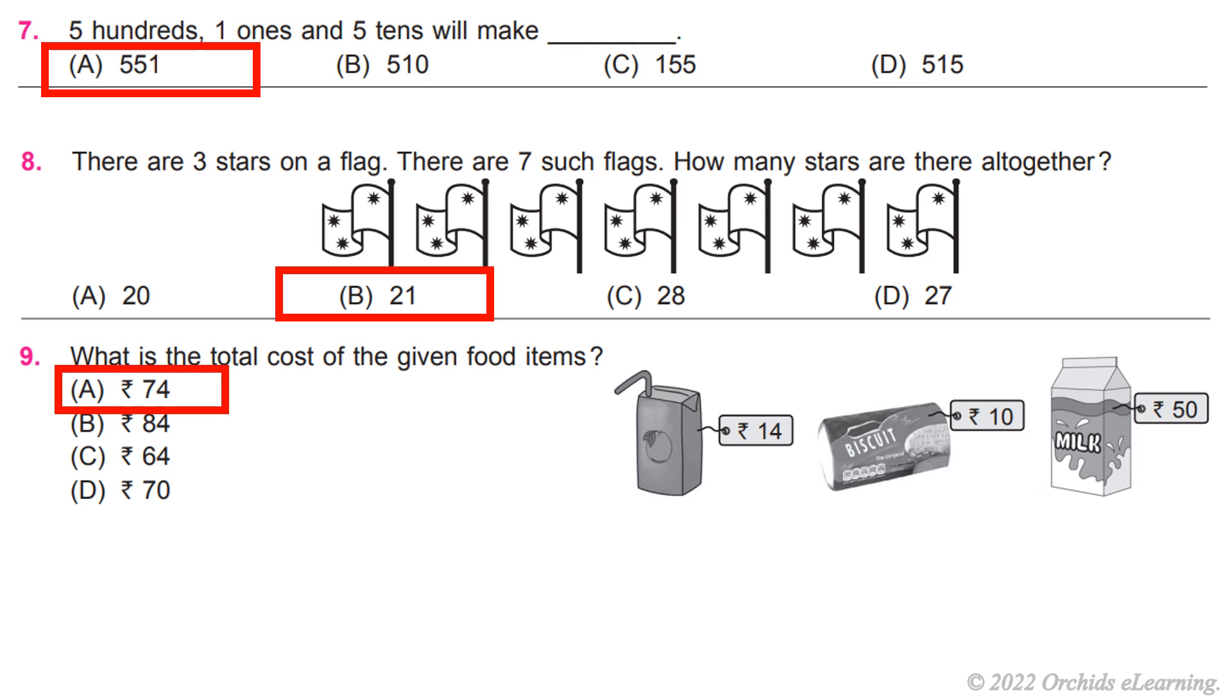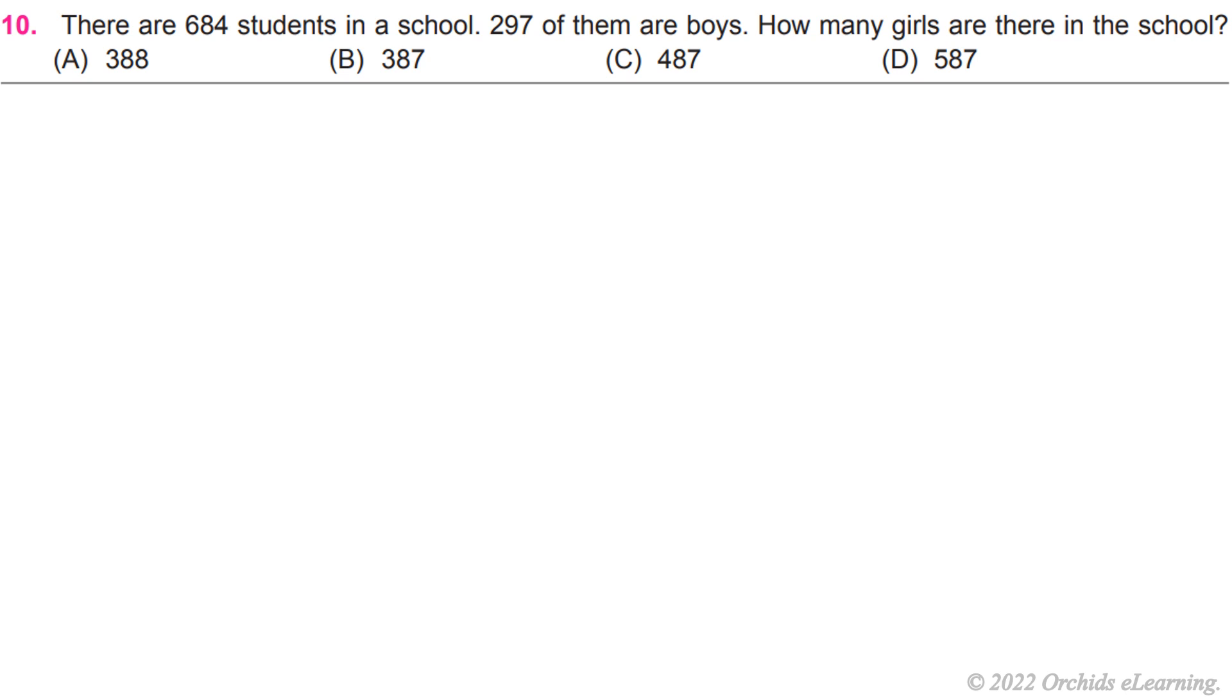Question 10: There are 684 students in a school. 297 of them are boys. How many girls are there in the school? B) 387.